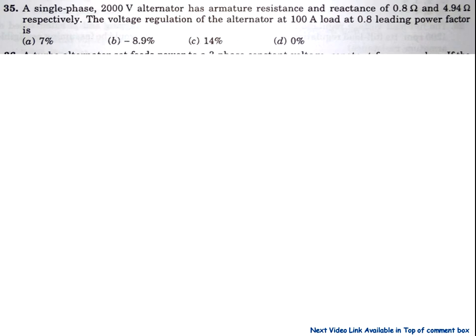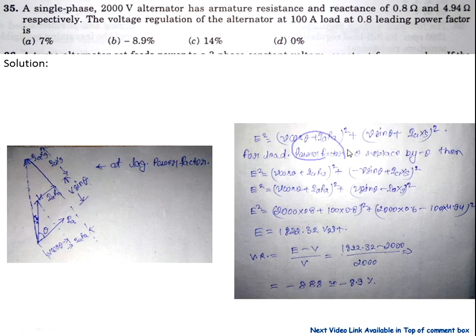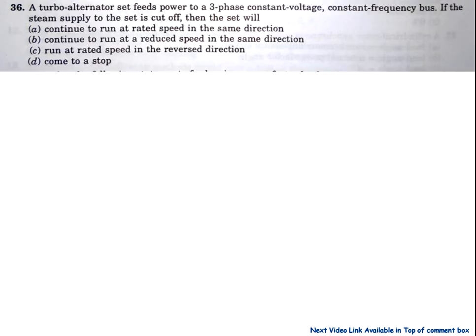Now come to question number 35. A single-phase 2000-volt alternator has the given armature resistance and reactance. The voltage regulation for 100 amperes at 0.8 power factor lagging is — this is a simple question. From the phasor diagram, E² equals (V·cosθ + Ia·Ra)² + (V·sinθ + Ia·Xa)². For leading power factor, the sine term becomes negative. After substituting the values, E equals the calculated value, giving a voltage regulation of minus 8.9 percent. So option B is correct.